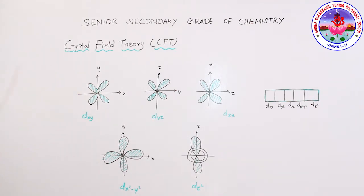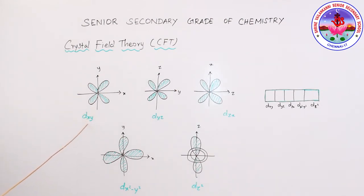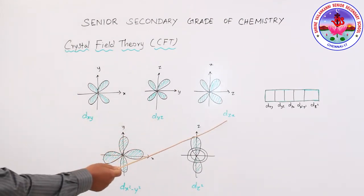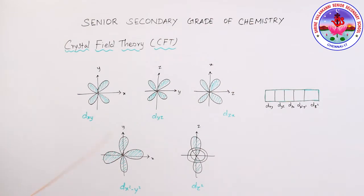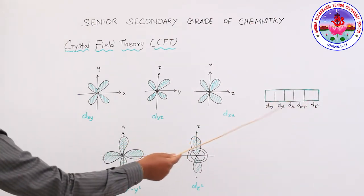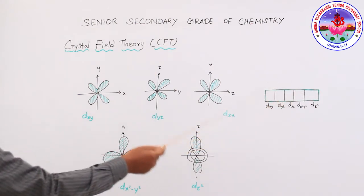You have already seen the shapes of the D orbitals — studied in structure of atoms in class 11. There are five D orbitals: Dxy, Dyz, Dzx, Dx²−y², and Dz². These five D orbitals are called degenerate orbitals, meaning they all have the same energy.